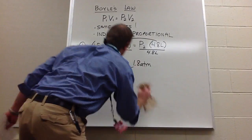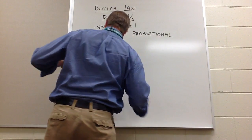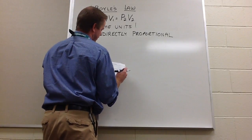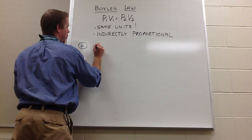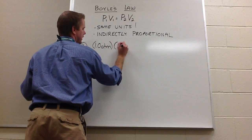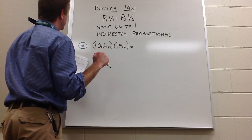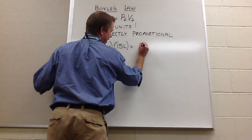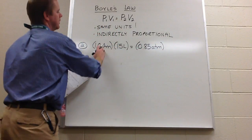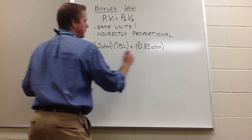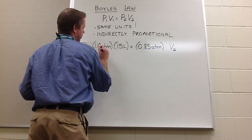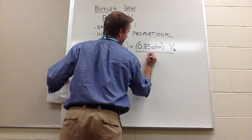Let's do number two together. If I added 15 liters of air to a balloon at sea level — that's 1.0 ATM — so 1.0 ATM times 15 liters equals... if I take the balloon to Denver where the air pressure is 0.85 ATMs — that's why you can kick 65-yard field goals, because the air pressure is significantly reduced from sea level — what would be the new volume? So you take 1.0 times 15 and divide by 0.85.